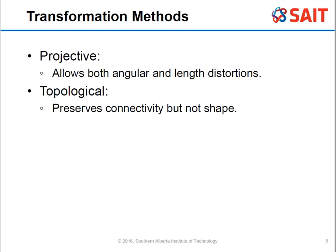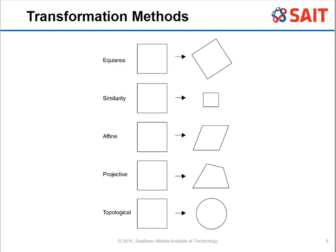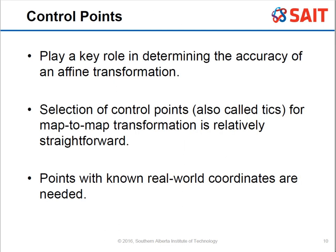Here are some visual examples: equal area is like rotating a square to look like a diamond. Similarity takes a square to a smaller rotated diamond. Affine goes from a square to a parallelogram. Projective takes a square to a trapezoid. Topological goes from a square to a circle.